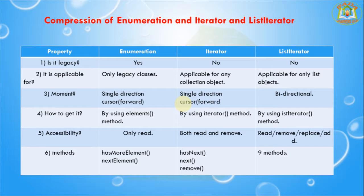Property — Movement: Enumeration moves only in a single direction; Iterator moves only in the forward direction; ListIterator moves both forward and backward — it is bidirectional. How to get the cursor object: Enumeration — using the elements() method; Iterator — using the iterator() method; ListIterator — using the listIterator() method.